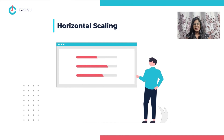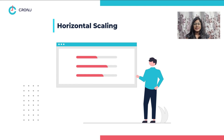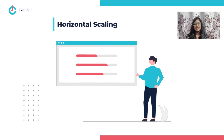Horizontal scaling. The cost of vertical scaling increases exponentially every year, but the cost of horizontal scaling increases linearly.